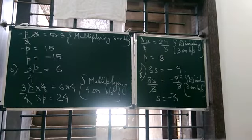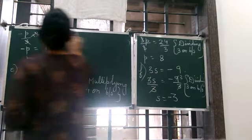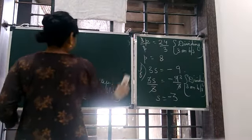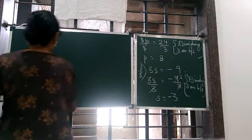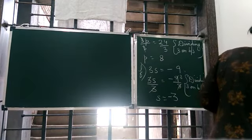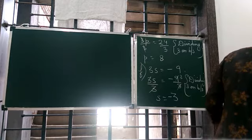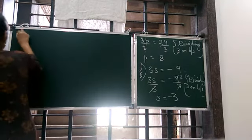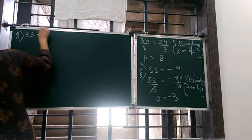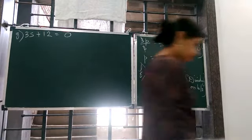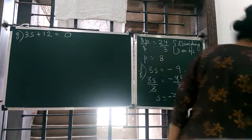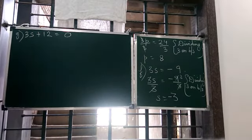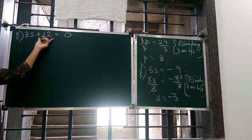Then G. 3s plus 12 is equal to 0. So now first thing, we need to remove this 12 from here, this plus 12. What to do?